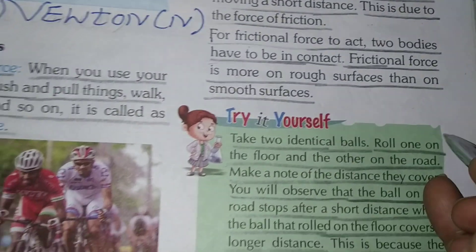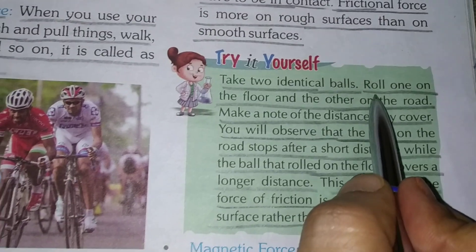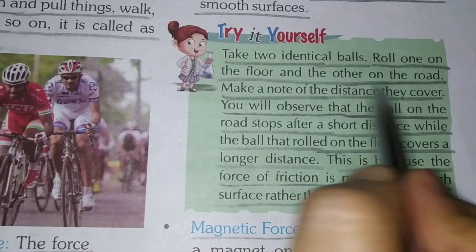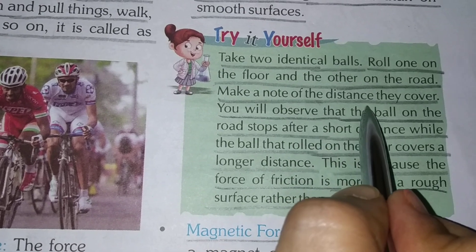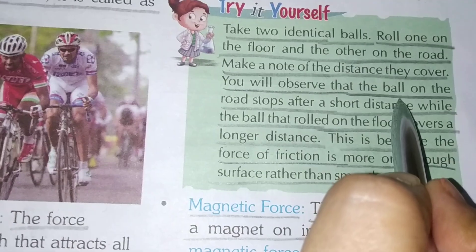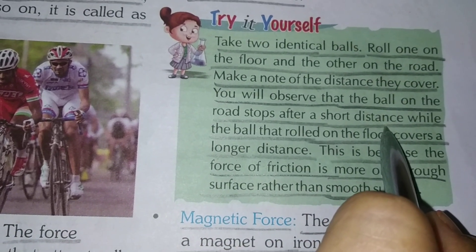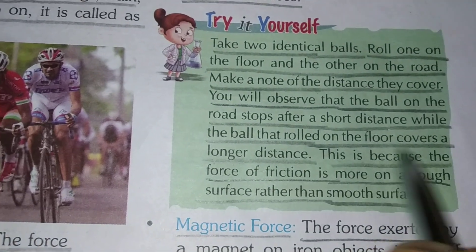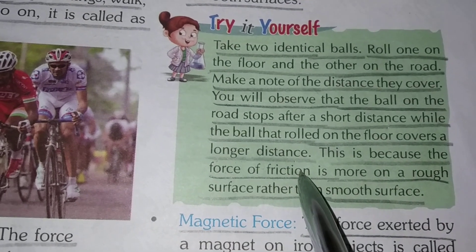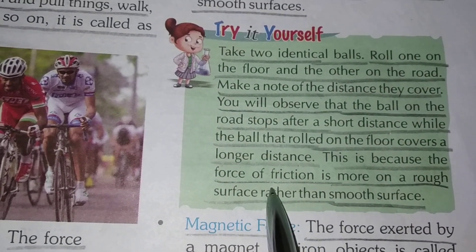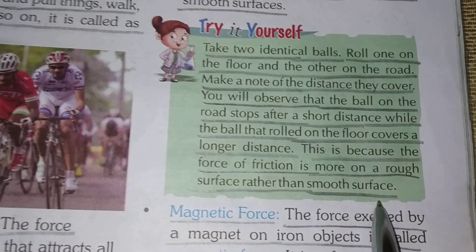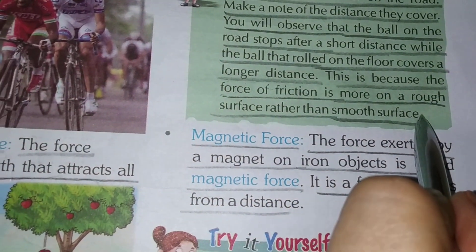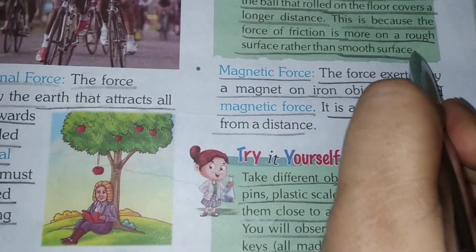Now we will do one activity. Take two balls — roll one on the floor and the other on the road. Make a note of the distance they cover. You will observe that the ball on the road stops after a short distance, while the ball that rolled on the floor covers a longer distance. This is because the force of friction is more on a rough surface than on a smooth surface.